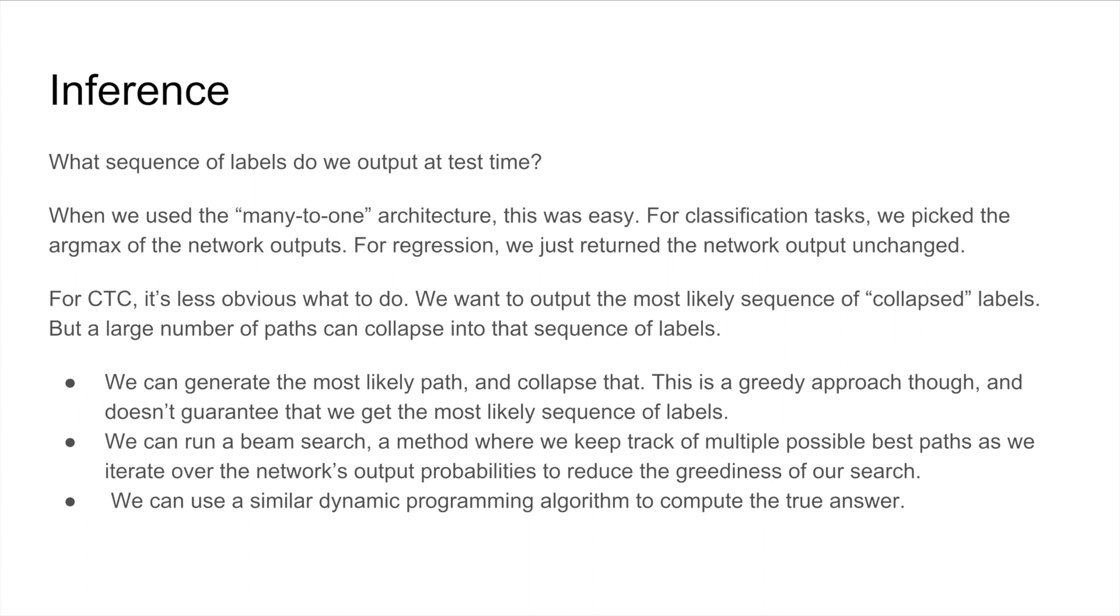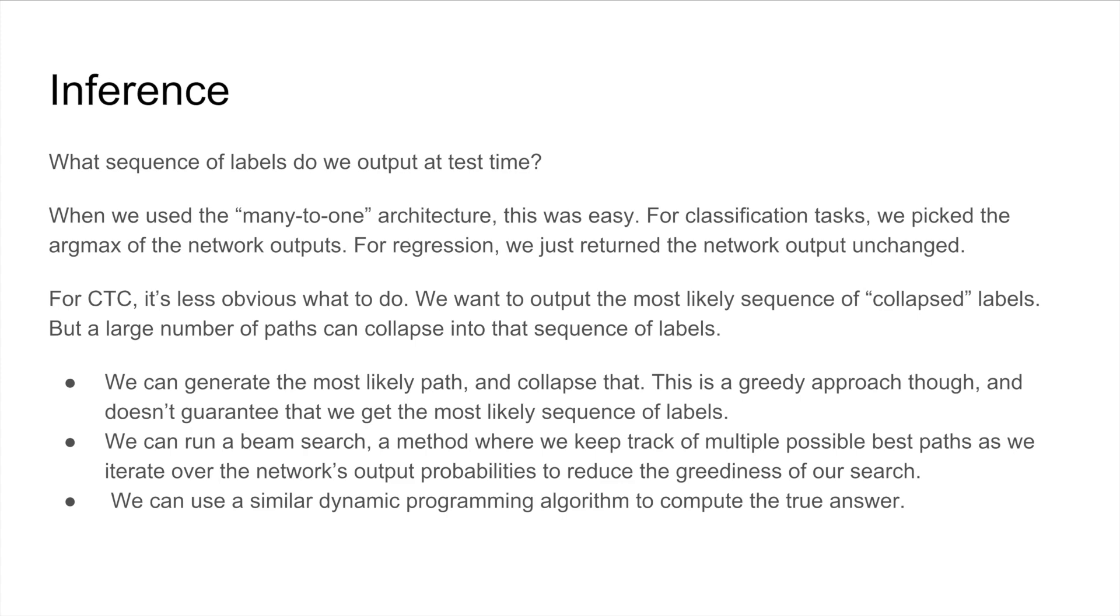So now the question comes to what do we do at test time? So right now we have a trained network. We're going to output a sequence of probabilities. And we may just hope that by taking the max probability at each step and then using those labels and then collapsing them using the function B, we may get a good result. And we might. But this is generally a greedy approach. It just does not guarantee that we will get the most likely sequence of labels. So there is a more intensive algorithm to determine the true answer of this. But we can also run an approximate search, a beam search, which is a method where we can keep track of multiple best paths. And we can just iterate over these to reduce the greediness of our search, but not exactly come to an exact answer. And this is generally what we're going to use and suggest that you use in your assignment.